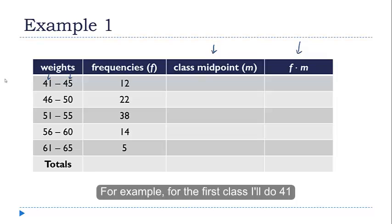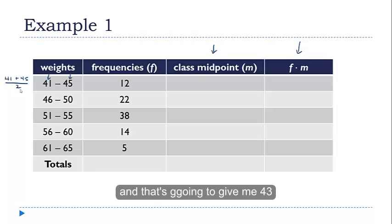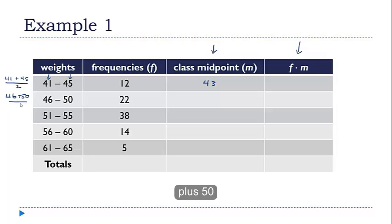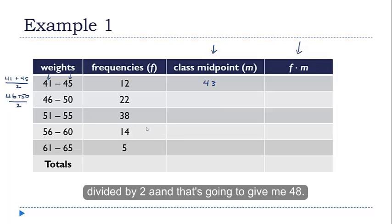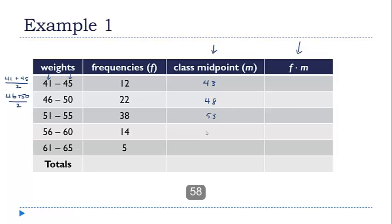For example, for this first class, I'll do 41 plus 45 divided by 2, and that's going to give me 43 for the midpoint. Then for the next one, I'll do 46 plus 50 divided by 2, and that's going to give me 48. And if you keep doing that for all of these classes, you'll get 53, 58, and 63.